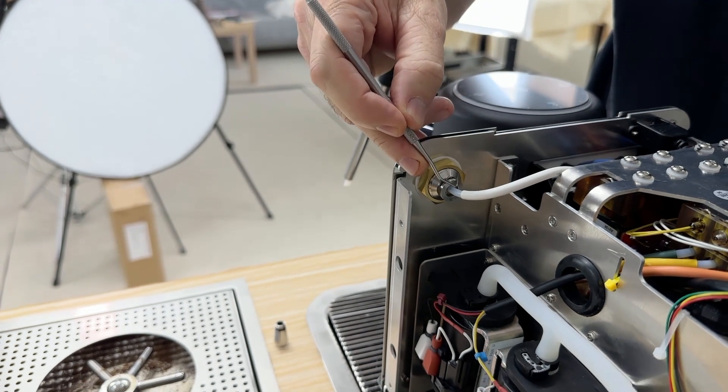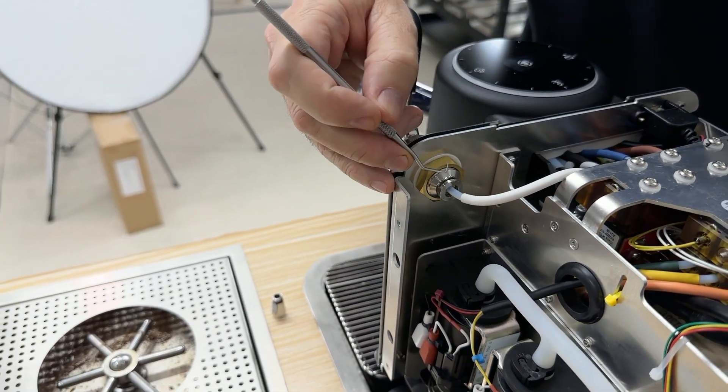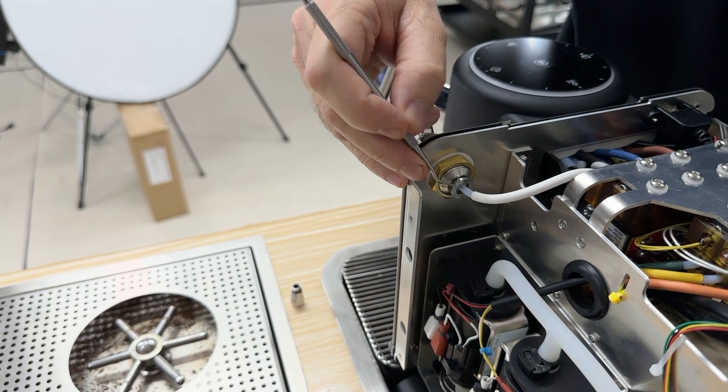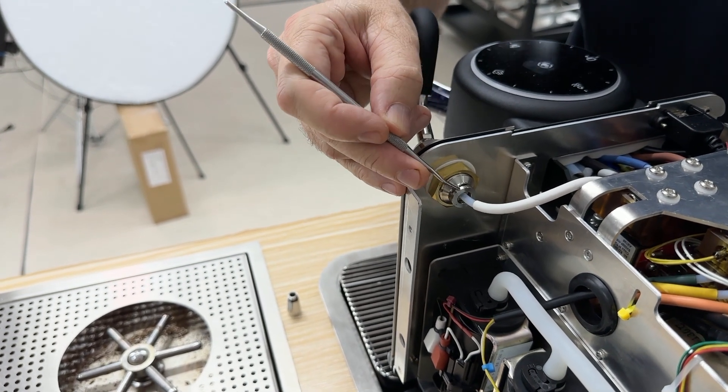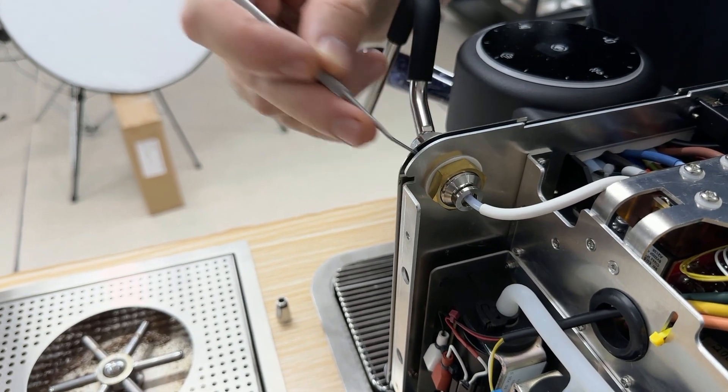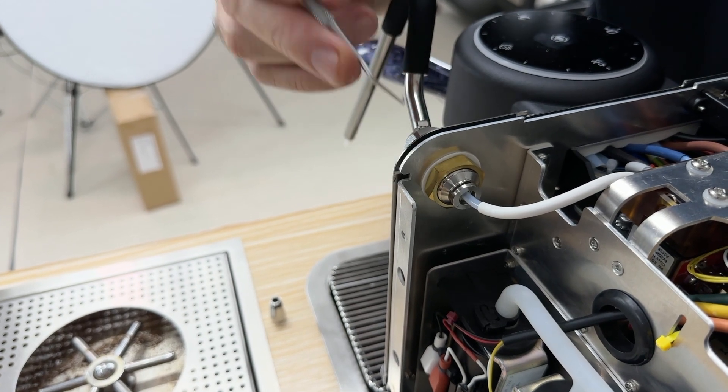You'll notice this is all metal and that is something we did differently from Nestle. Nestle would tend to make these out of plastic. We'd rather not have any plastic in the water path. So this is stainless steel right here.